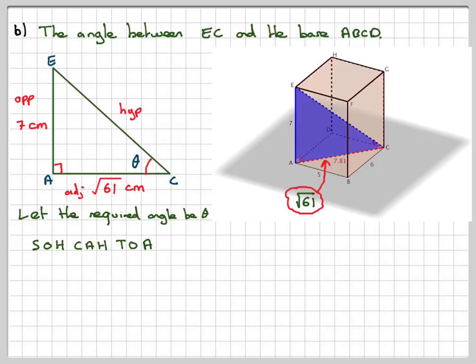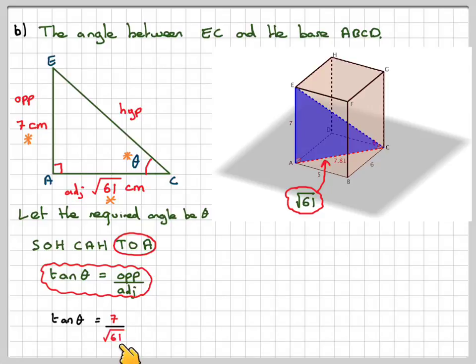Using SOHCAHTOA, we've got to identify the correct ratio. So, we have opposite, adjacent, and we want to find the angle. So, we're going to be using TOA. Write down the ratio, which is tan theta is opposite over adjacent. And then fill in the information. So, tan theta is going to be equal to 7 over square root of 61 because it's better to use the exact value rather than one that's been rounded off.